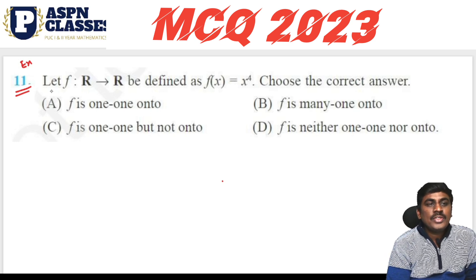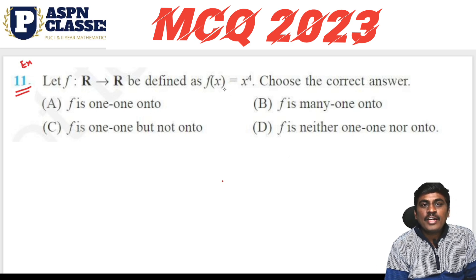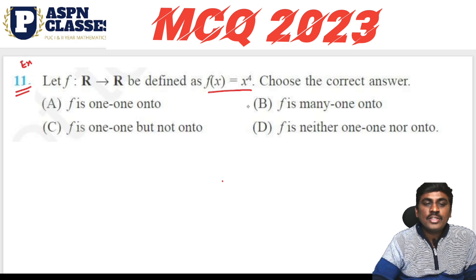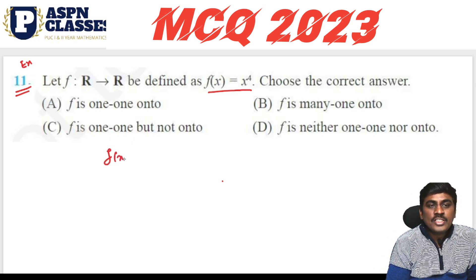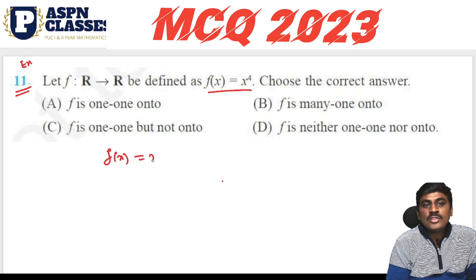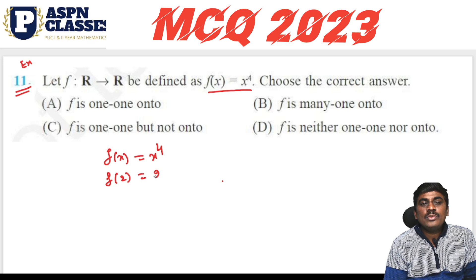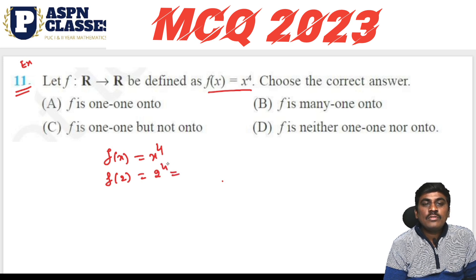Question 11: Define f from R to R, where f(x) = x raised to 4. Let me check: f(2) = 2⁴ = 16, and f(−2) = (−2)⁴ = 16 as well. So different inputs give the same output.